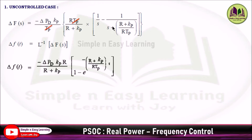Here it is S plus this term — if it were S minus, you would put plus in the exponential term. Since here it is S plus, the exponent is negative. This is the final expression of the uncontrolled case.